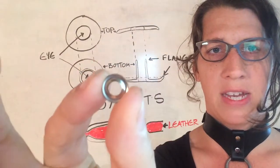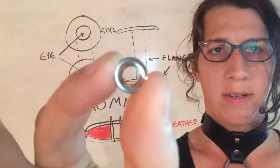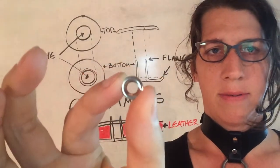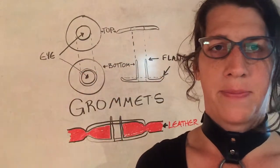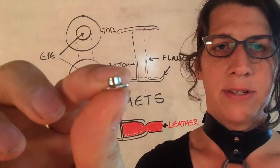There's the top of the eyelet. Just make sure that's centered. And then you have the bottom. That's got this little flange.